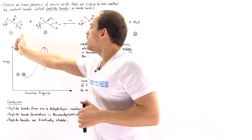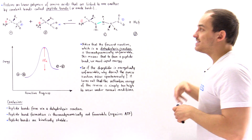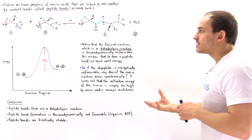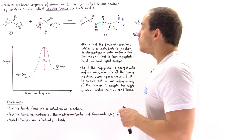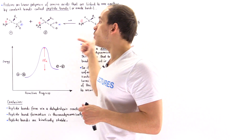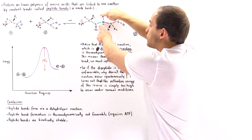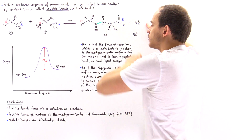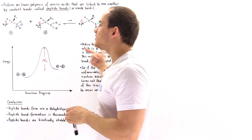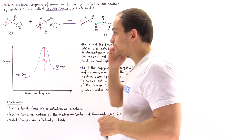Going in the forward direction — forming the peptide bond — we have a dehydrolysis or condensation reaction, because we release a water molecule. If we go in reverse and this bond breaks by consuming a water molecule, that is known as a hydrolysis reaction.